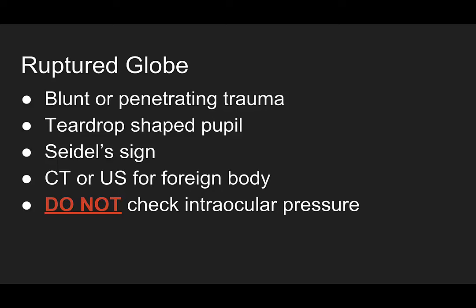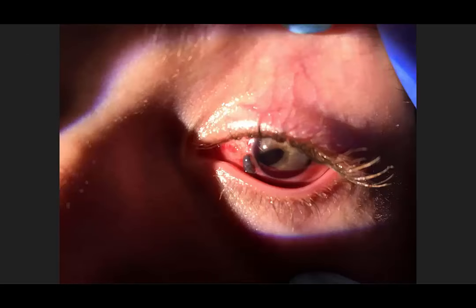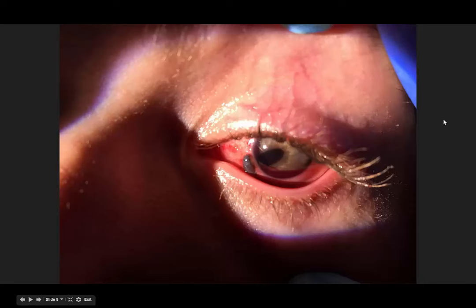If they have an open globe, all you're going to be doing is adding more pressure and forcing more aqueous fluid out of their eye. Here's a picture that came to me from two of our residents. This patient has that classic tear drop shaped pupil. Here's where the foreign body entered, and the flow of fluid has actually pulled that iris out of the defect in the eye. This is the iris protruding from the laceration.